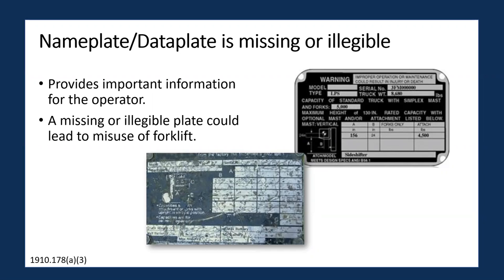A data plate that looks like this — illegible — would need to be replaced, as the operator wouldn't be able to read all the important information. The easiest way to replace it is to look up the manufacturer or model number of the forklift, give the manufacturer a call, provide the model number, and they'll send you out another data plate.